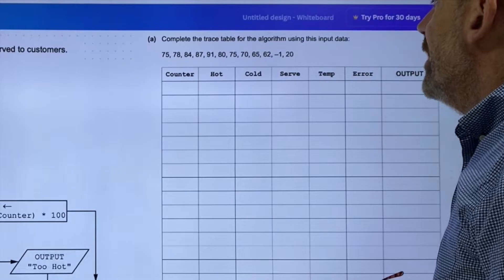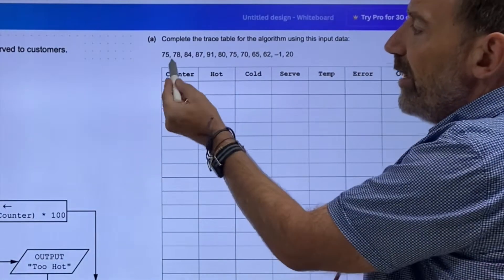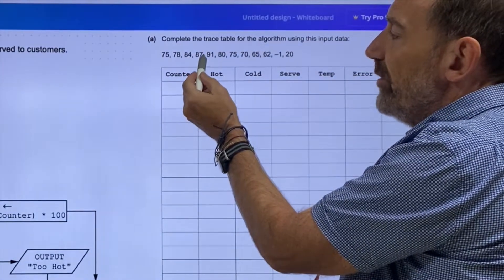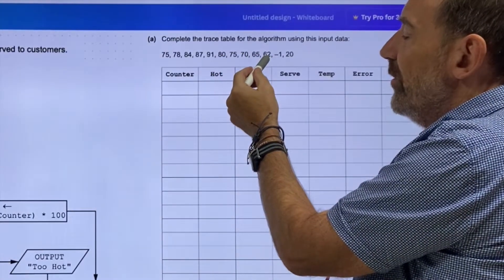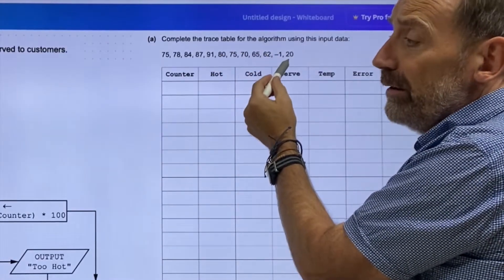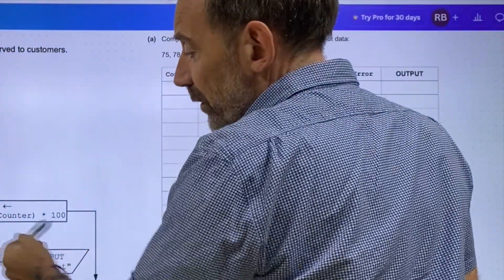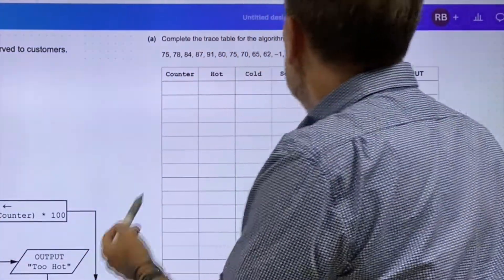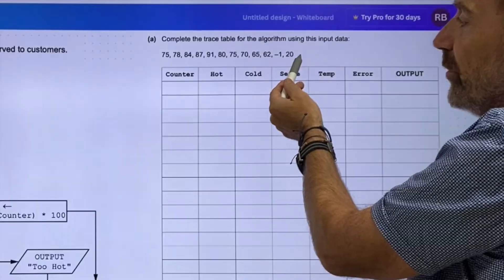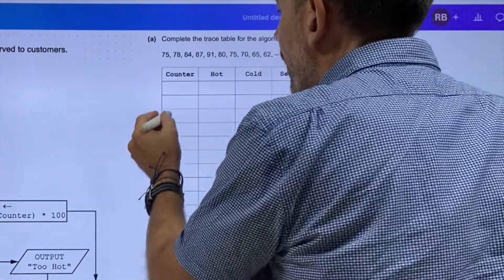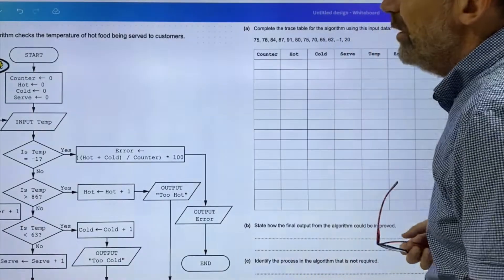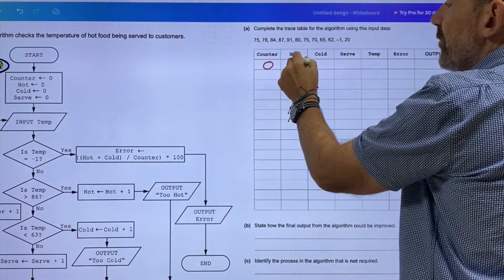Then input temperatures and run around here until we've got some things where the temperature is too cold or too hot. An error because the food must be frozen is minus one. Let's have a little look. Complete the trace table for the algorithm using this input data: 75, 78, 84, 87, 91, 80, 75, 70, 65, 62.